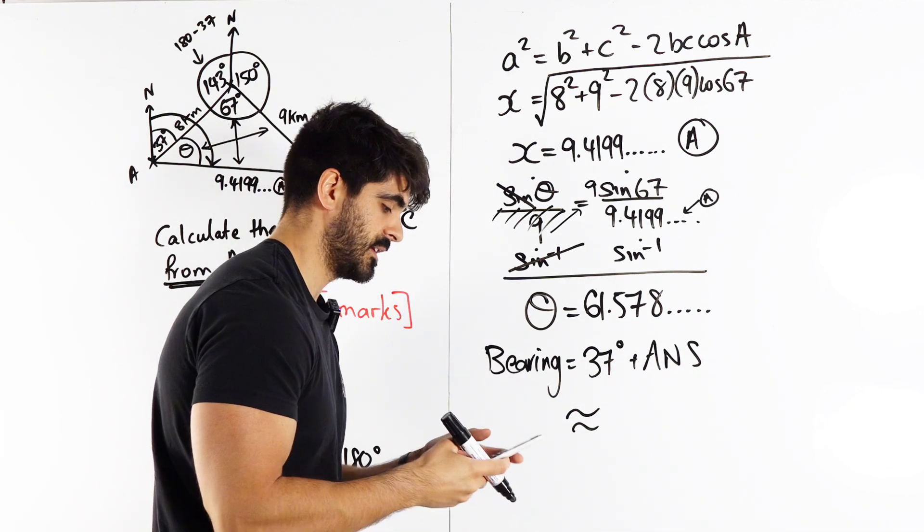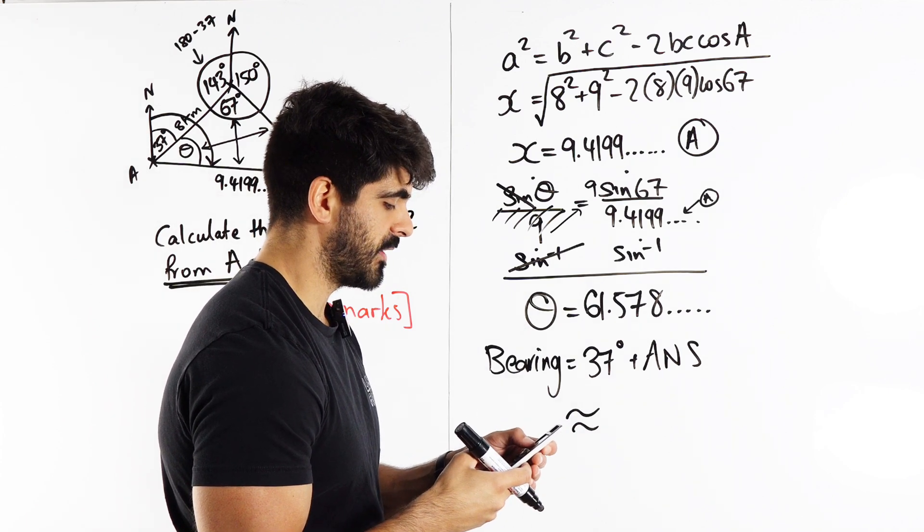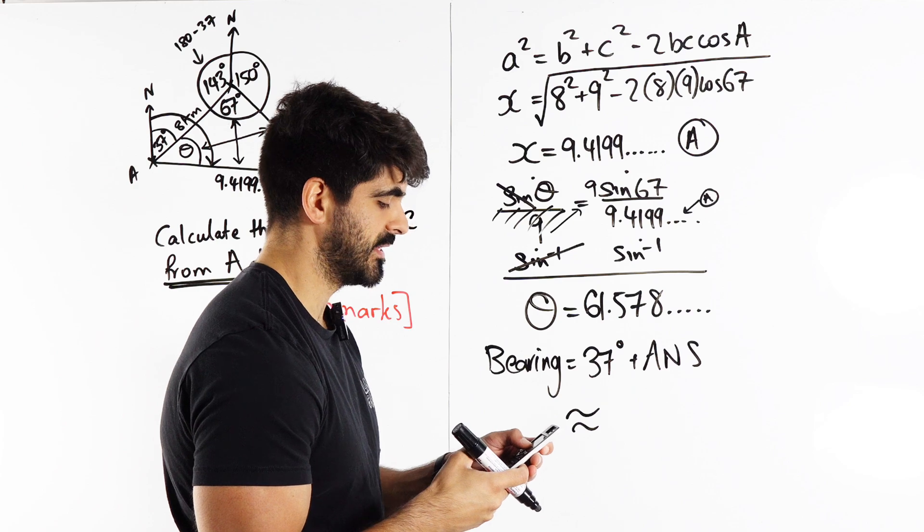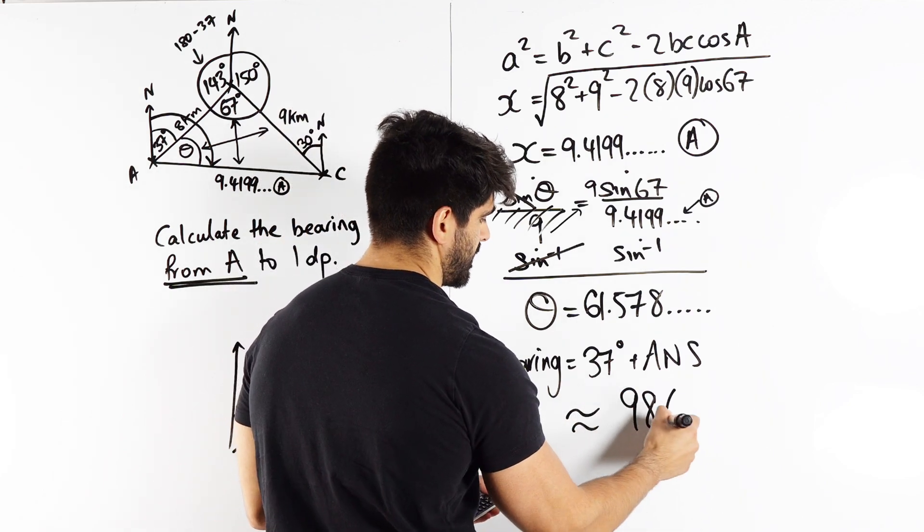And now, I'm going to round it. So, I'm going to add 37. 98.578, which will be 0.6. 98.6 degrees.